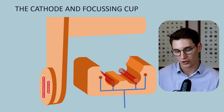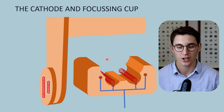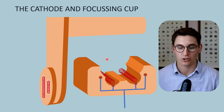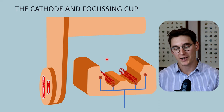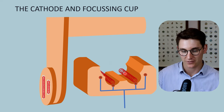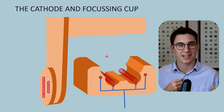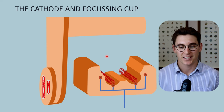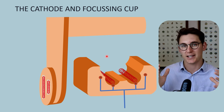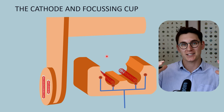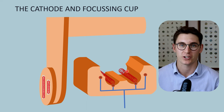We produce electrons on the surface of our tungsten filament coil through a process called thermionic emission — the emission of electrons due to heat. We run a current through this tungsten filament coil. The tungsten filament itself has high electrical resistance, and that current running through it will generate heat. The tungsten filament coil will heat up more and more, and that heat energy will allow valence electrons in our tungsten atoms to become excited, to go to the surface of the tungsten filament coil. That process is called thermionic emission.